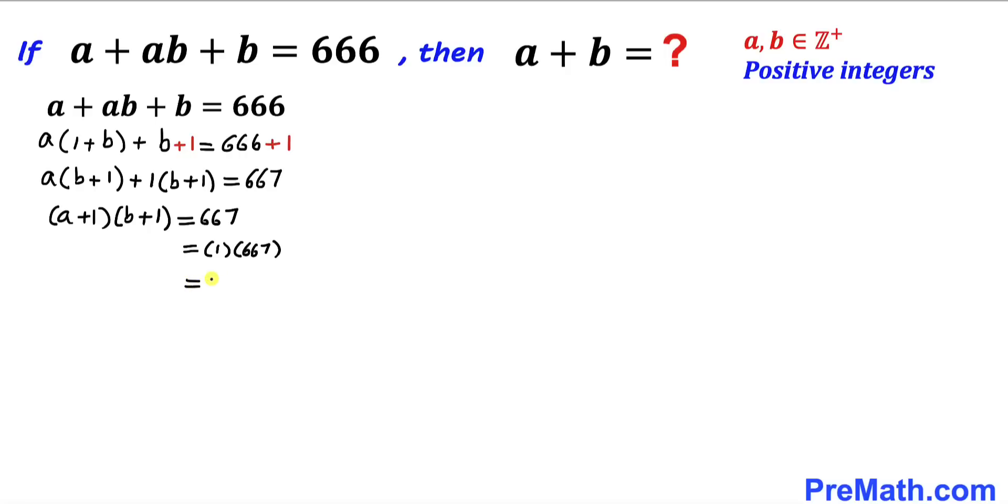The third possibility is 23 times 29, and the last one is 29 times 23.